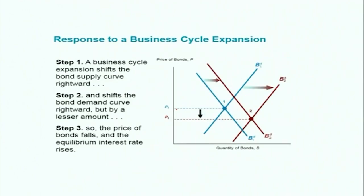Similarly, for a business cycle expansion: the bond supply curve shifts rightwards as firms see increased investment opportunities. The bond demand curve also shifts rightwards, but by a lesser amount, because the first response is mainly by suppliers — firms anticipating increased investment — while the impact on demand takes slightly more time, as households' income increases at a later stage. From the initial equilibrium position we reach a new equilibrium at a lower bond price.